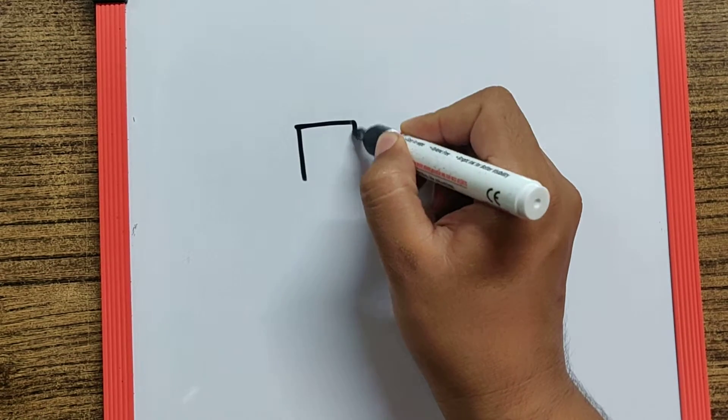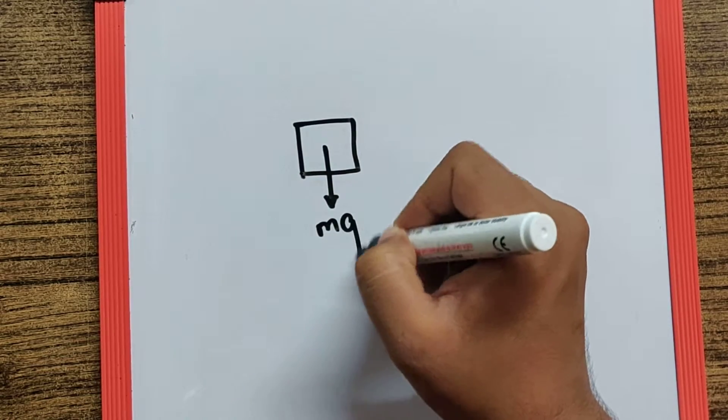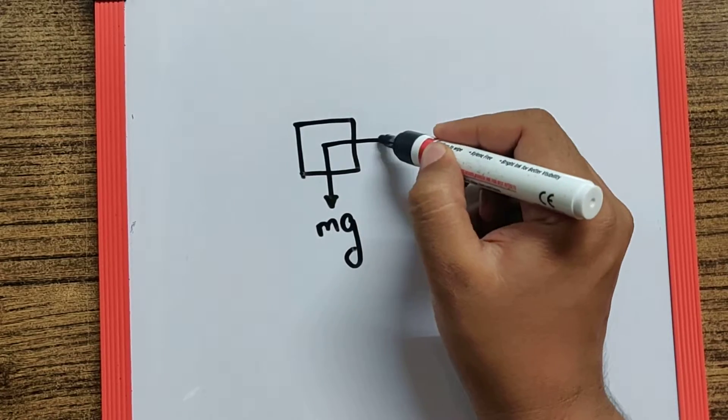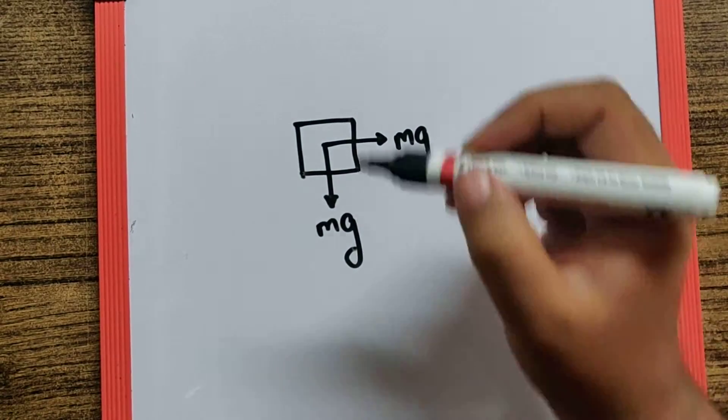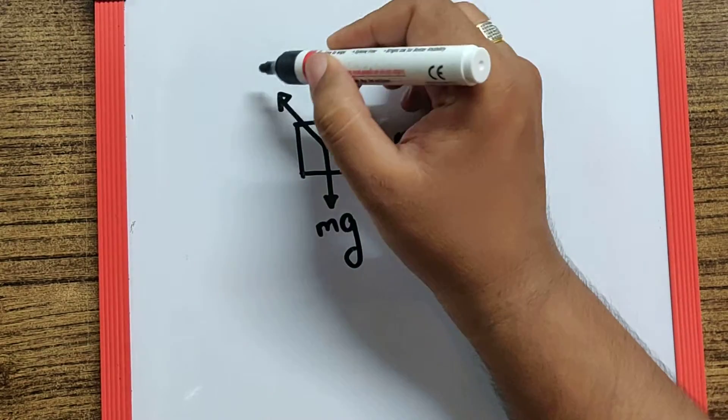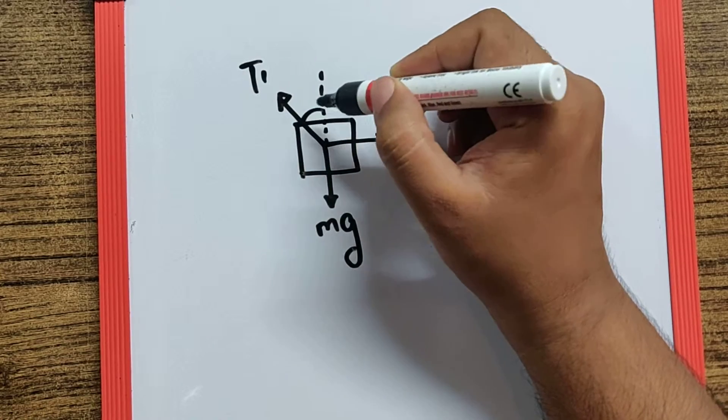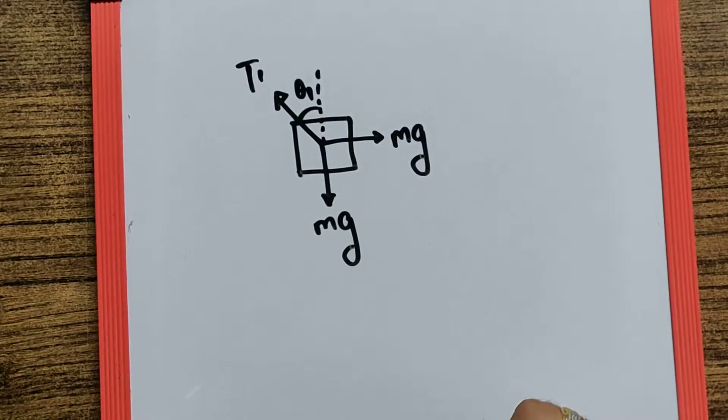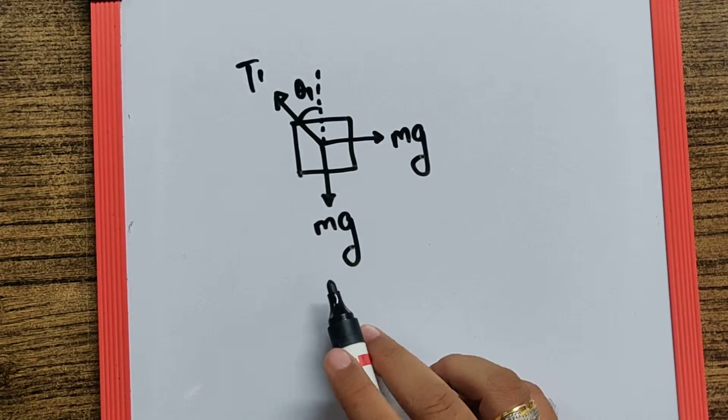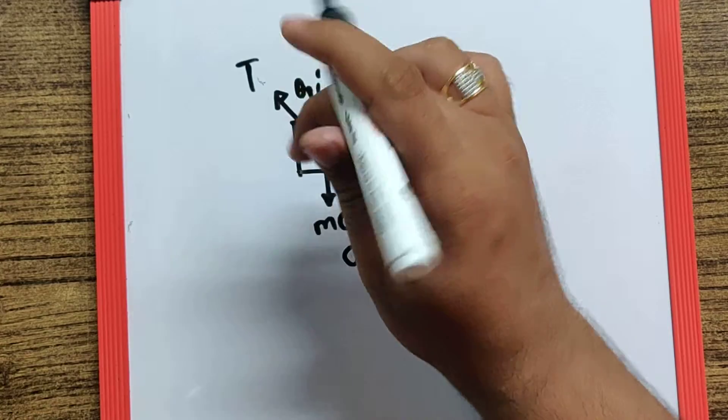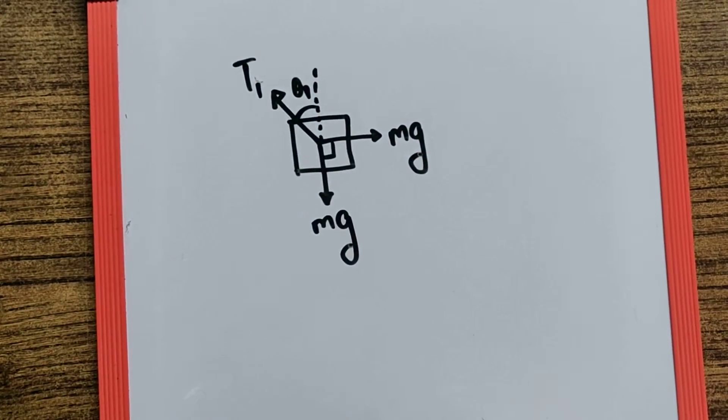So if I draw the free body diagram of that body, I would find Mg which is the weight acting vertically downwards and Mg which is the horizontal force given to the body, and the tension T1 which is in the wire and makes an angle theta 1 with the vertical. Now I can say if the system is supposed to be in equilibrium, the tension T1 is going to be the resultant of Mg and Mg which are acting perpendicular to each other.